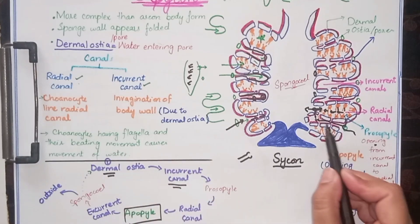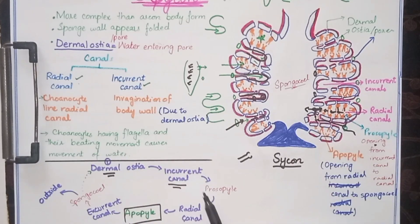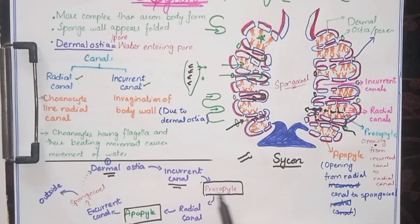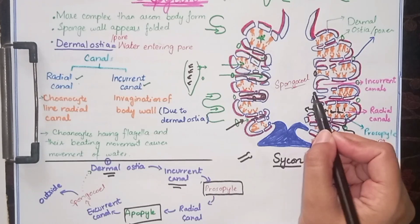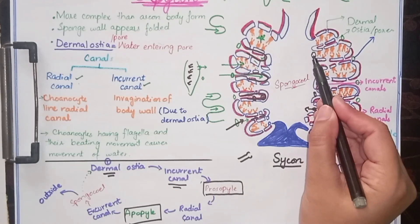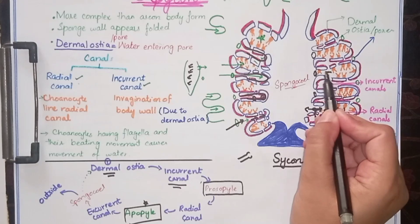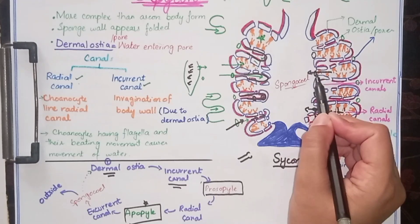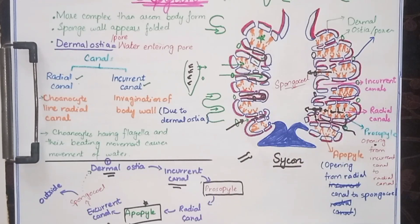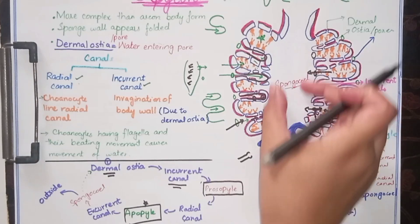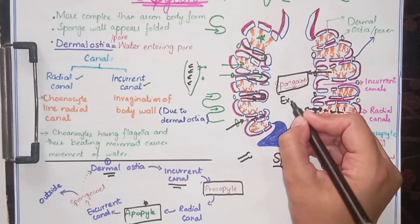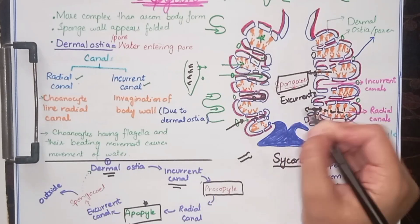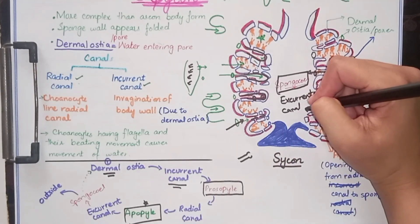At the end of the radial canal there is another opening through which water enters the spongocoel. This opening is known as the apopile. So water enters from the dermal ostia into the incurrent canal, from the incurrent canal water enters the radial canal by the help of the prosopile, and next at the end of the radial canal is the apopile through which water moves out. There is a cavity here known as the spongocoel, sometimes written as excurrent canal.